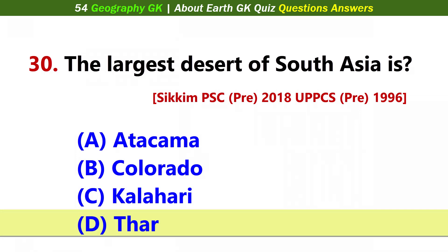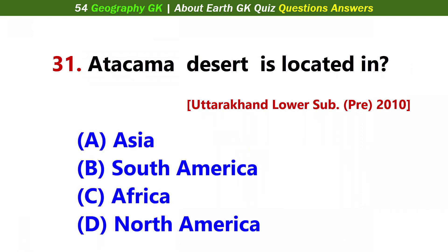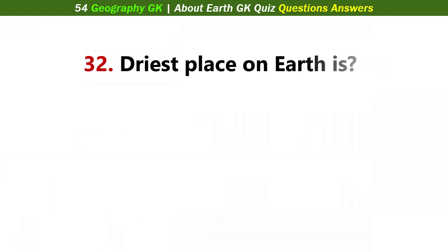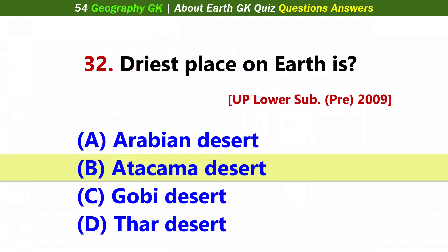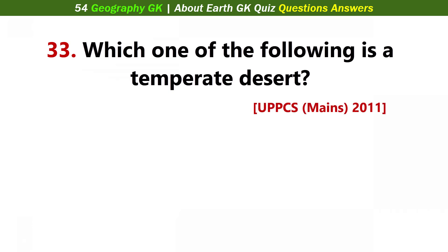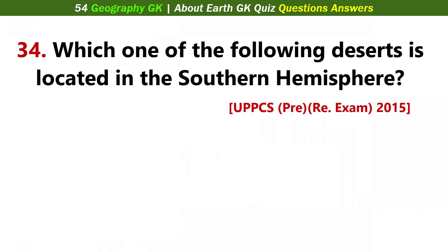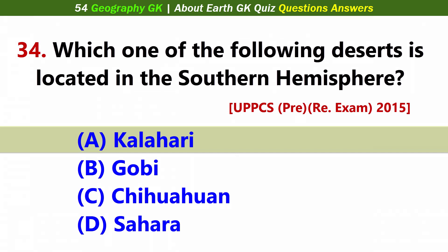The largest desert of South Asia is? Answer D: Thar. Atacama desert is located in? Answer B: South America. The driest place on Earth is? Answer B: Atacama Desert. Which one of the following is a temperate desert? Answer D: Patagonia Desert. Which one of the following deserts is located in the Southern Hemisphere? Answer A: Kalahari.